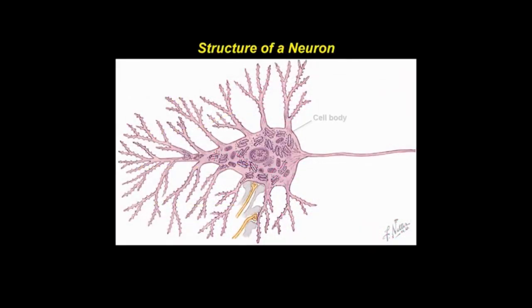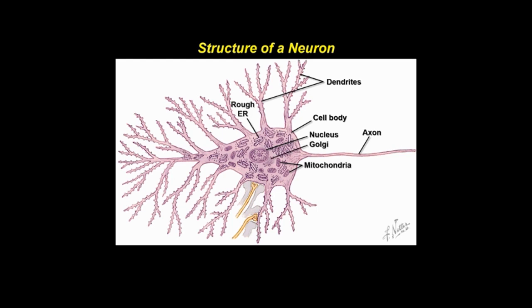The neuron is a polarized cell with a cell body, dendrites, and axon. Cell bodies range in size from 5 to 150 microns in diameter, and contain a single nucleus and organelles, including mitochondria, Golgi, and rough ER.